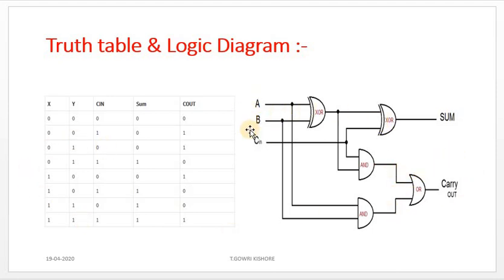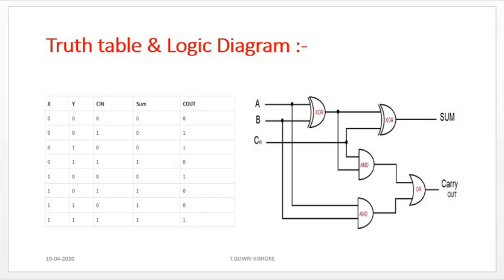In the full-adder we have three inputs, so the possible number of input combinations is 2 to the power of 3, which equals 8 — therefore from 0 to 7.